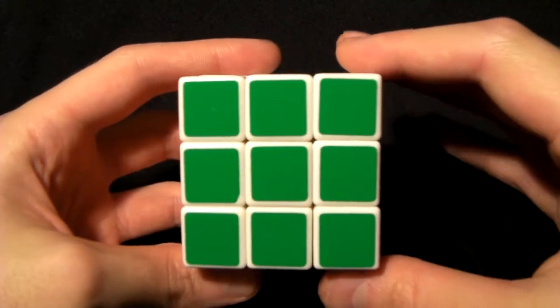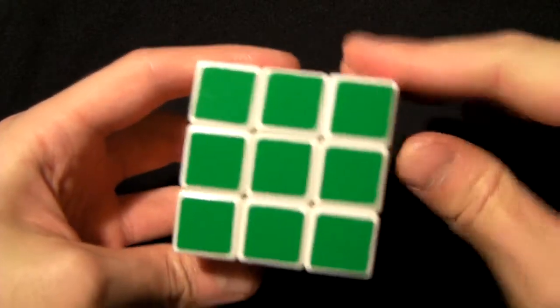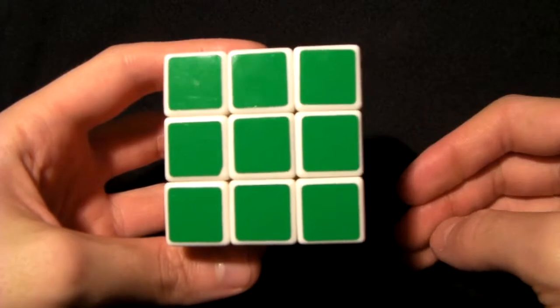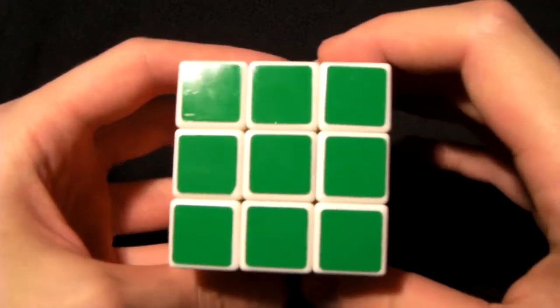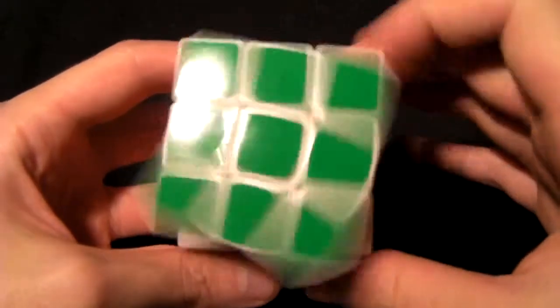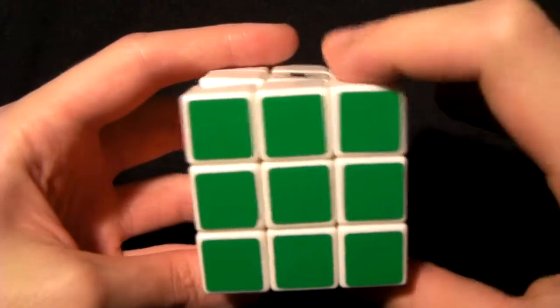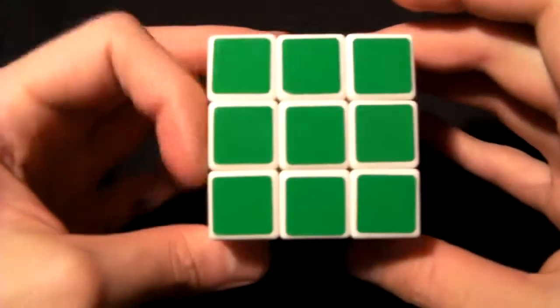To indicate two turns, that's the easiest - it would just be F2, so F followed by the number 2. That just means turn it twice, and it doesn't matter which way you turn it since the result's going to be the same. I could go clockwise or anticlockwise - same thing.